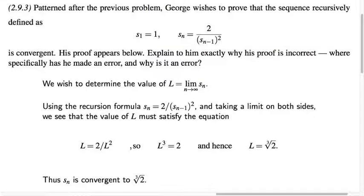I want to wrap this up by looking at problem number 59 in your packet. George, a fictitious George, wishes to prove that this sequence is convergent. The first term is 1, the nth term is 2 over the square of the previous term. Here's what he does. He takes the limit on both sides of this recursion formula, s_n equals 2 over s_n-1 squared. Each of the sequences turns into an L. L equals 2 over L squared, so L cubed equals 2. Therefore L is the cube root of 2, and we have proven that this sequence converges to the cube root of 2.